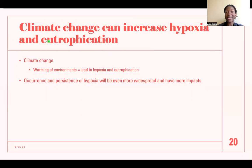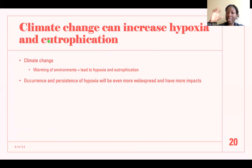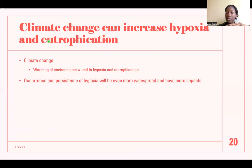Climate change can also exacerbate the effects of hypoxia and eutrophication. At its simplest, climate change means the warming of environments. If temperatures at the surface of the water keep increasing but the temperatures at the bottom do not, the separation of the top and bottom water layers will keep happening and may eventually become permanent. This means that the occurrence and persistence of hypoxia will be even more widespread and have even more impact.